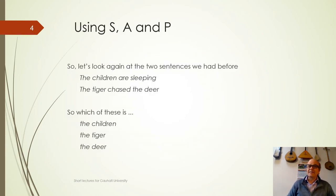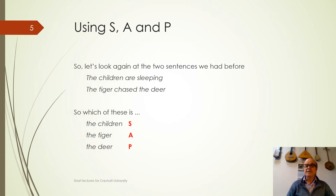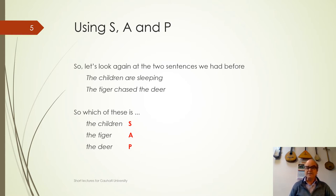Let's go back to the sentences we had before and work out which of those three each of the arguments is. So: 'the children are sleeping,' 'the tiger chased the deer.' The children is the S, the single argument of an intransitive clause. The tiger is the A, the agent or subject-like argument of a transitive clause, because there is an object there. And the deer is the P, the patient or object-like argument of that same transitive clause.